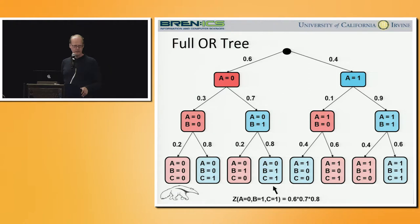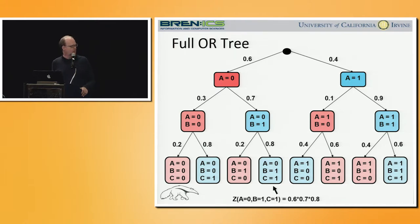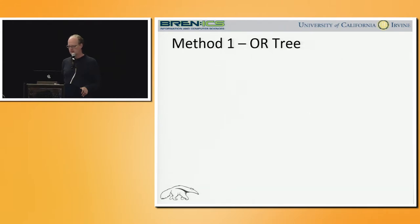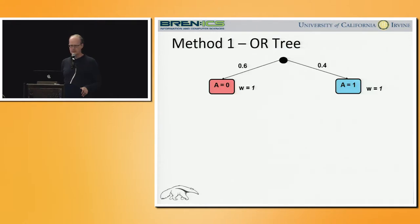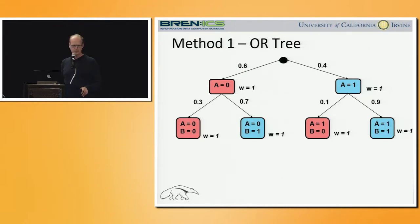Let me now demonstrate the algorithm on a simple problem of three binary variables A, B, C. On each arc I have the cost of the particular partial assignment. The abstractions are given as shades of blue or red, and the abstraction introduces stratification on each level. This is a simple OR search space. We start with an empty assignment, so we instantiate variable A. They belong to different abstractions, each one has a weight associated with it. Then we refine this abstraction and get four nodes, and instantiate variable B.